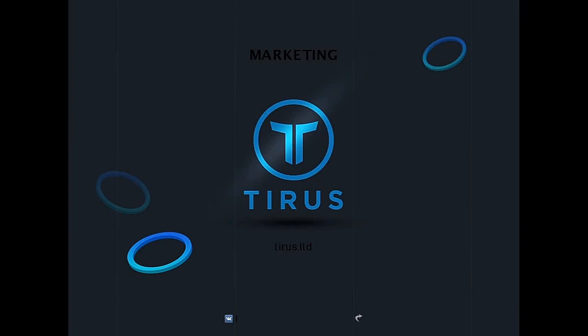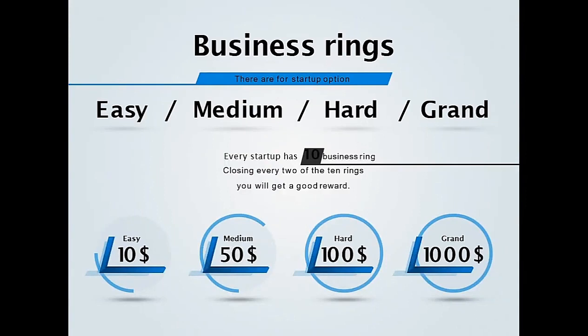The plan starts with business rings. You will see here four different types of rings: Easy, Medium, Hard, and Grand. You can take entry into the system with just $10. The investment of $10 can be done by Perfect Money or by Bitcoin.